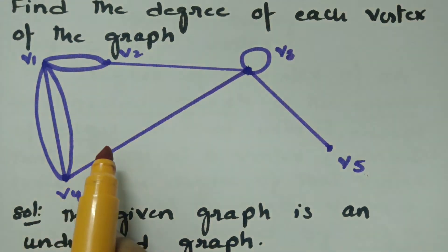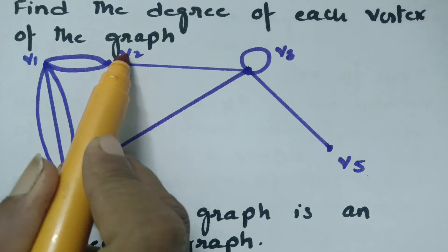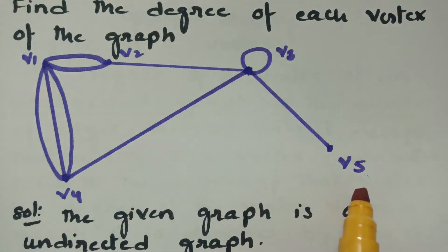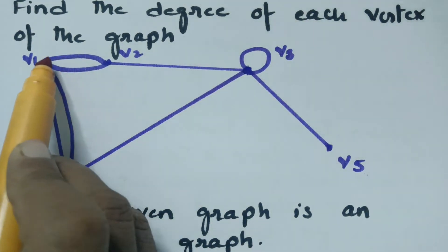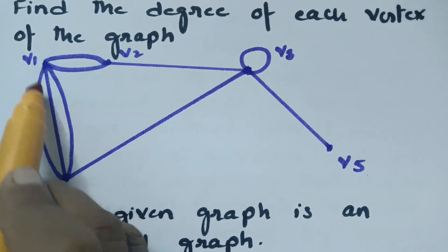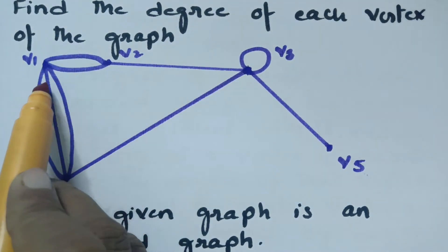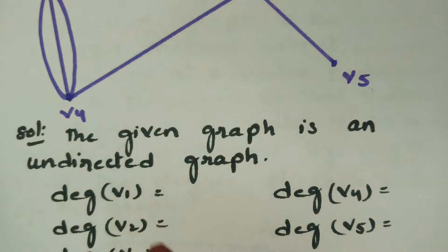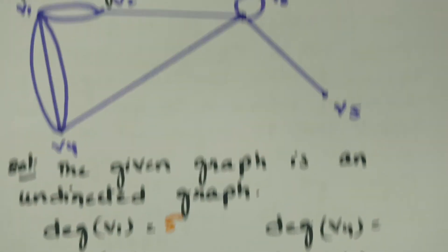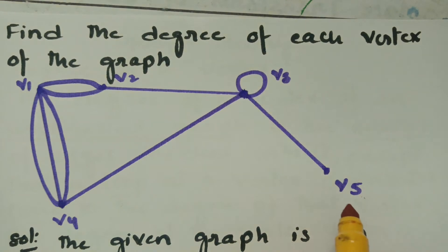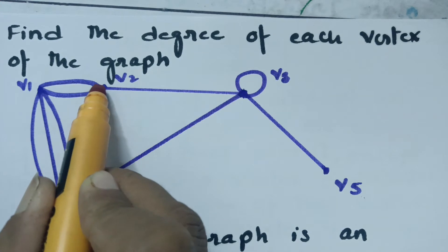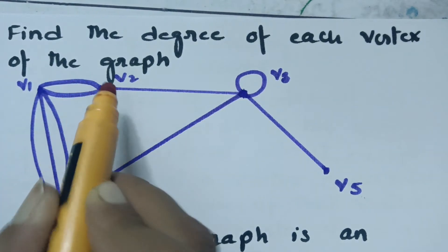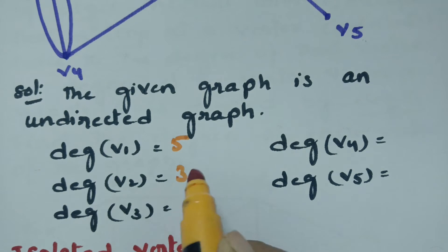Coming to this graph, the vertices are v1, v2, v3, v4, and v5. For v1, the edges incident with it are 1, 2, 3 — therefore the degree of v1 is 5. Coming to v2, the edges incident with it are 1, 2, and 3 — therefore the degree here is 3.